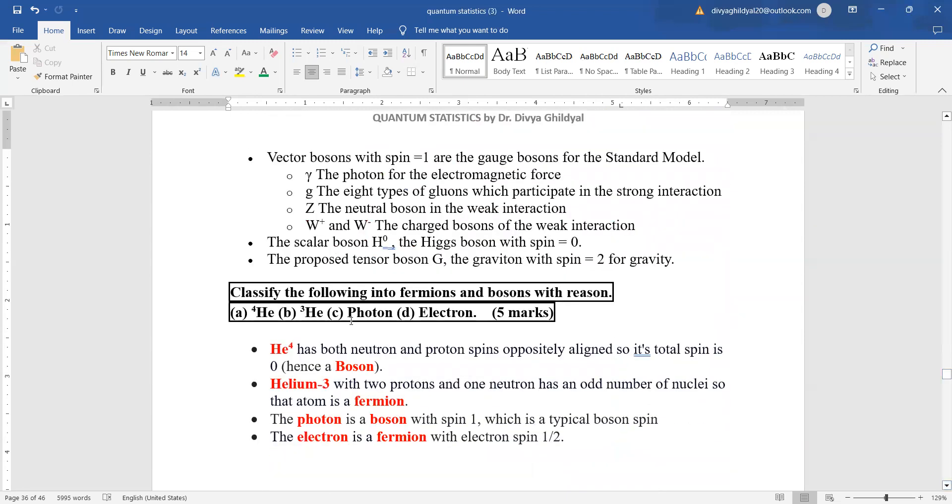Bosons basically include photons and Bose-Einstein statistics helps in explaining the thermal radiation from a hot cavity. This type of question where you will be given four or five elements and you will be asked to classify whether they are fermions or bosons. So this question was there in your previous year papers. Let us solve it. Classify the following either into fermions or bosons and give reason for the same.